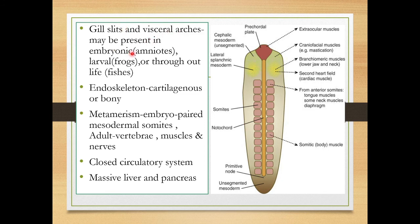Gill slits and visceral arches may be present in embryonic forms in amniotes. Amniotes — reptiles, birds, and mammals — have a membrane called the amnion, hence they are called amniotes. In amniotes, the gill slits and visceral arches are present only in embryonic forms. In frogs, they are present in the larval forms. In fishes, the gill slits and visceral arches are present throughout life.